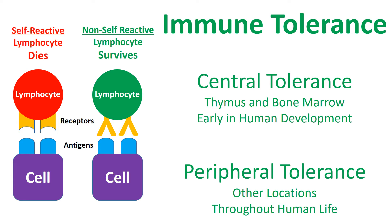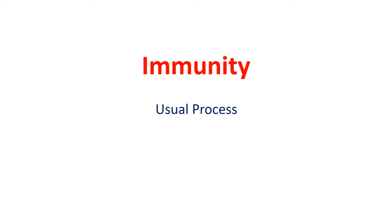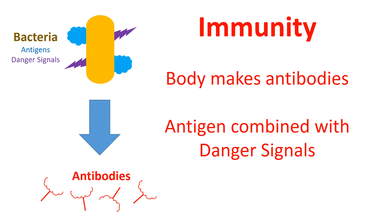Therefore this lymphocyte will die. On the right, the lymphocyte cannot attack the body's own antigens, and thus this lymphocyte will live. The body uses this process to remove self-reactive immune cells. The process of immunity is simpler. Immunity, which involves the production of antibodies, occurs when an antigen is combined with a danger signal. For instance, bacteria have antigens and danger signals. The danger signal tells your body to create an antibody against the bacterial antigen.